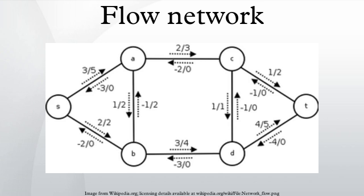An augmenting path is a path in the residual network, where u and v. A network is at maximum flow if and only if there is no augmenting path in the residual network.